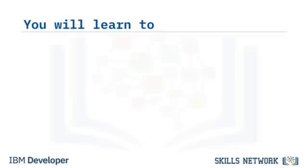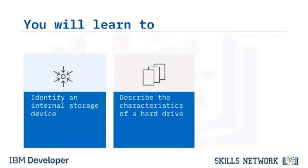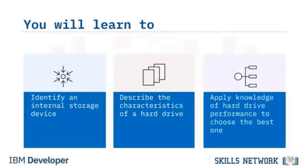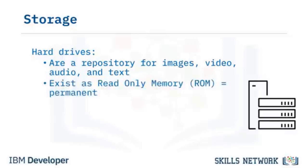Welcome to Hard Drives. After watching this video, you will be able to identify an internal storage device, describe the characteristics of a hard drive, and apply knowledge of hard drive performance to choose the best one. A storage device is hardware used to store digital data in the form of images, video, audio, and text. There are two kinds of internal storage: ROM and RAM.